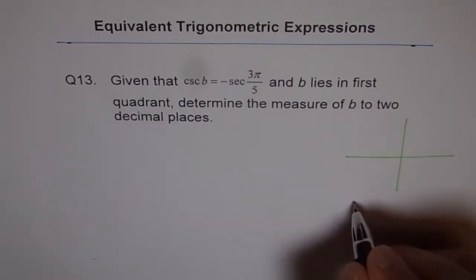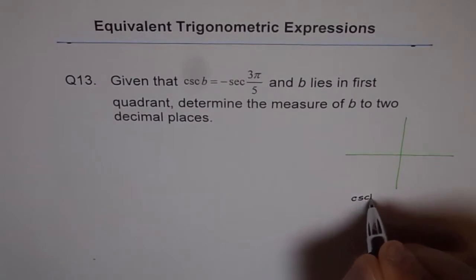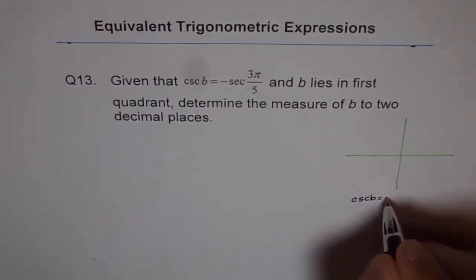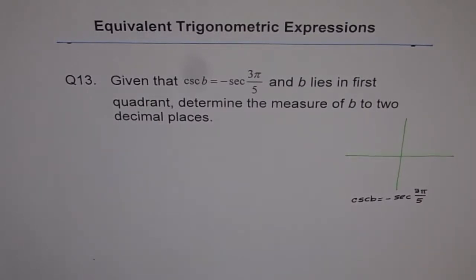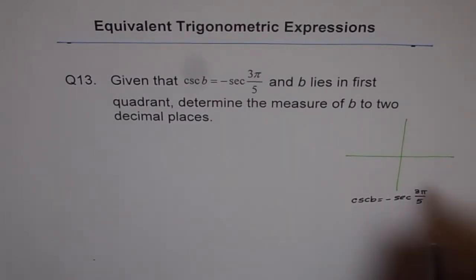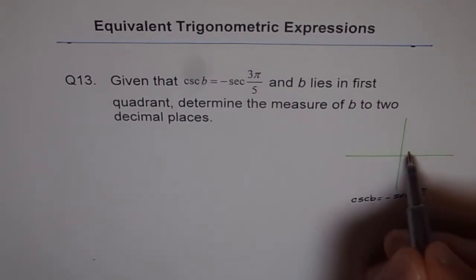What we have here is cosecant b equals minus secant 3π/5, correct. Now, we will draw this 3π/5 on our coordinate plane. You know, 3π/5 means that this π is divided into five portions.